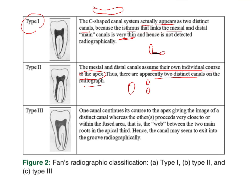Type 3: one canal continues its course to the apex, giving the image of a distinct canal, whereas the other proceeds very close to or within the fused area — that is, the web between the two main roots in the apical curve. Simply put, you have your distal canal and your mesiolingual or mesiobuccal appearing as two separate canals; however, as you go towards the radiographic apex, what appeared as two separate canals ends up becoming fused into one large canal. That is type 3.